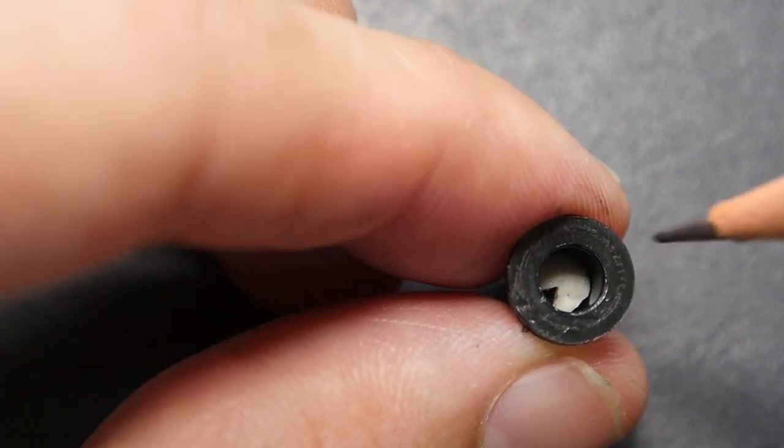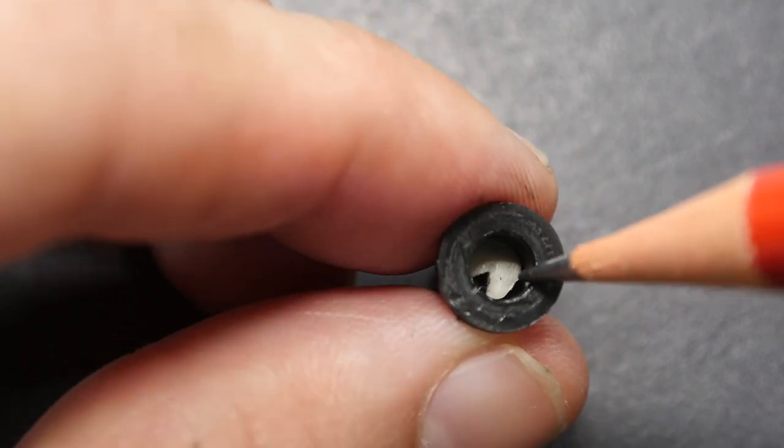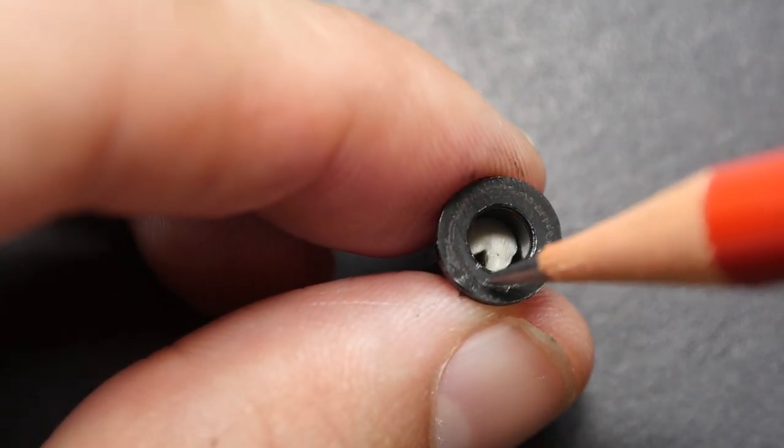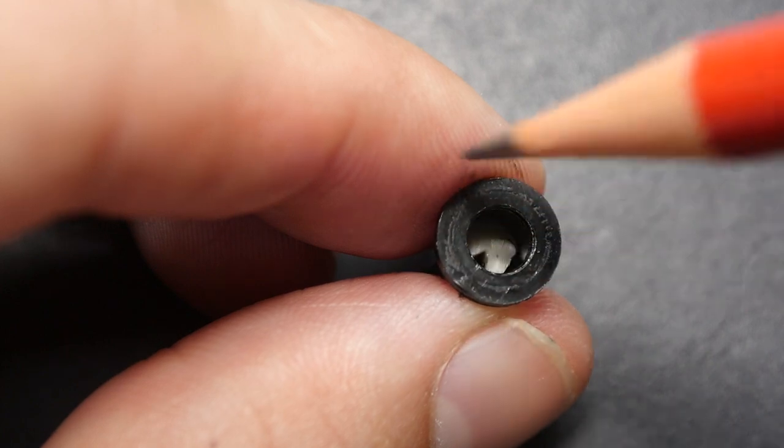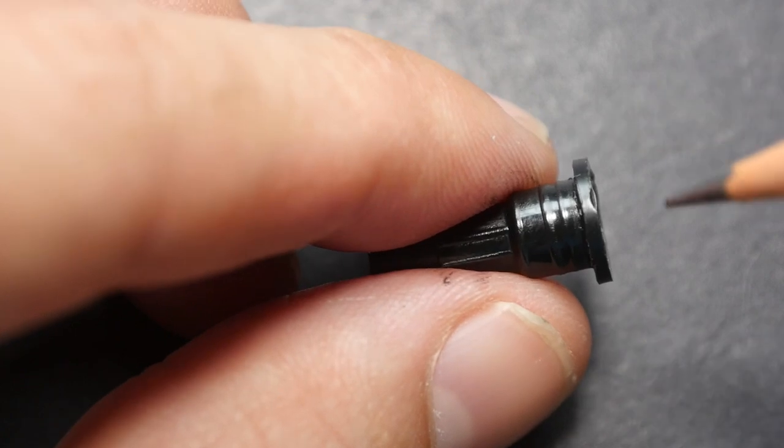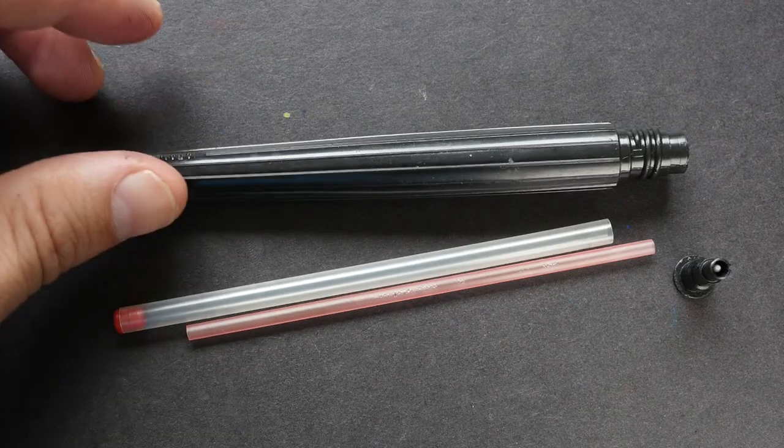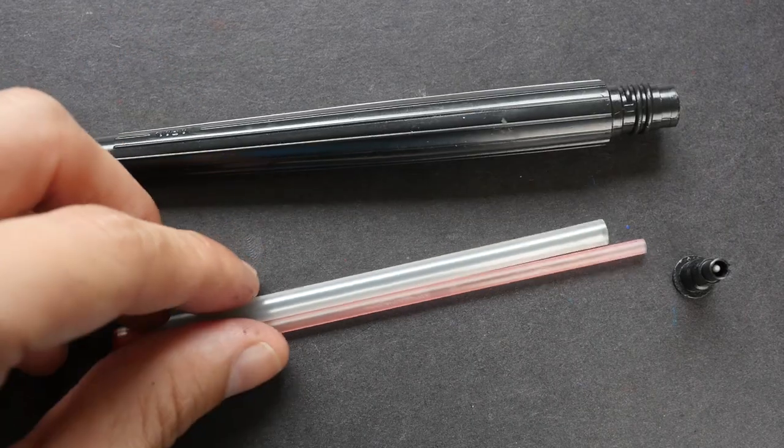If you do not take out this stopper and if you try to force your ink into this hole here, it will not work, because in order for ink to go inside, air has to escape, and there is nowhere else for the air to escape. So you have to take out this stopper in order to fill the ink into this cartridge.